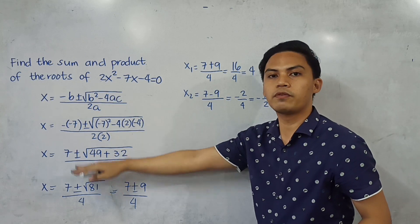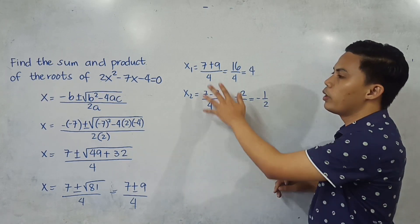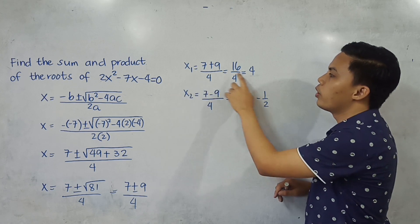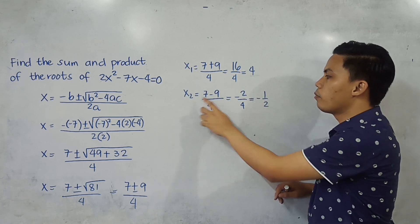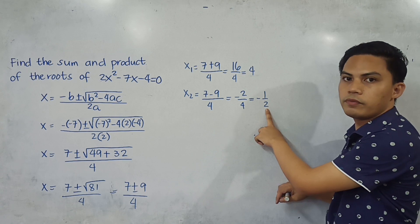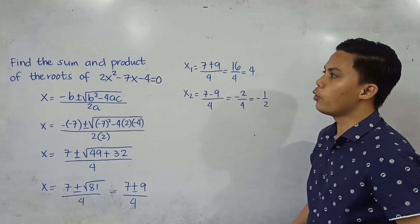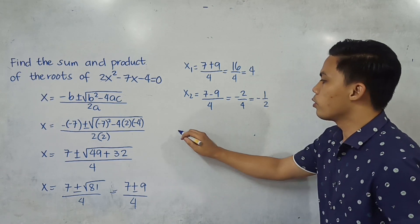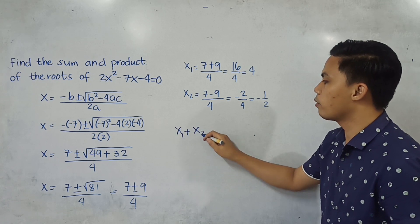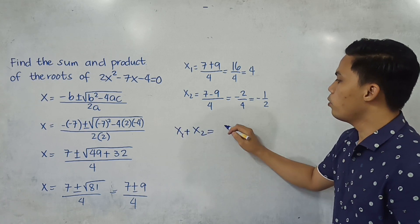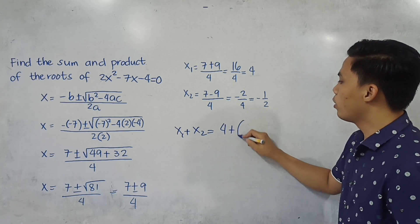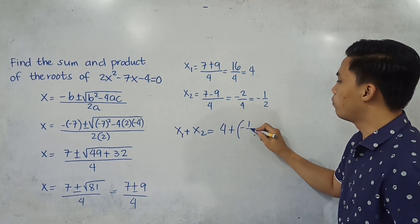By using the quadratic formula, we arrive at the following roots. The roots of our quadratic equation: x sub 1 is 4 and x sub 2 is negative one-half. Then we're going to look for the sum, so we're going to add x sub 1 plus x sub 2 — that is 4 plus negative one-half.